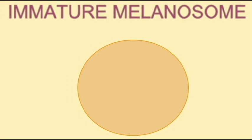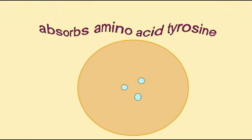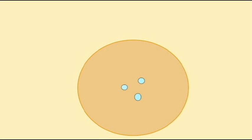The melanosomes absorb the amino acid tyrosine, which is then converted into the pigment melanin by the enzyme tyrosinase.